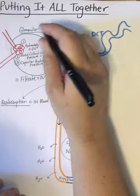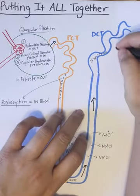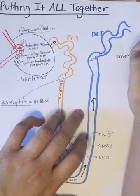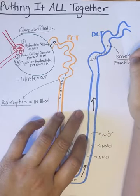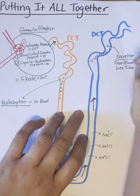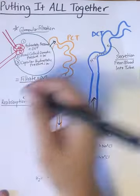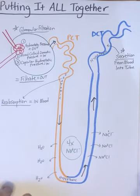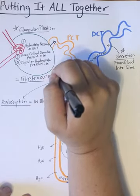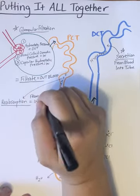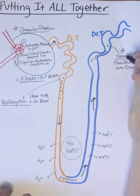When we say secretion, we're going to get rid of waste. Filtration happens at the glomerulus, reabsorption primarily occurs in the proximal convoluted tubule, and secretion goes from the blood into the tube. So: filtration is out of the blood and into the tube; reabsorption is from the tube back into the blood; secretion is from the blood into the tube. When you take all three of these together, that is going to create your urine.